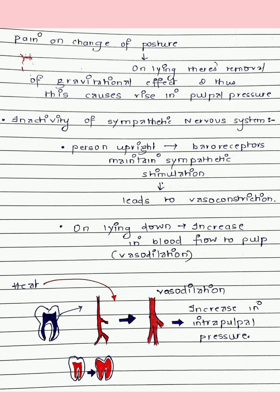Another reason is that when a person is upright, baroreceptors maintain sympathetic stimulation, leading to vasoconstriction of blood vessels. On lying down, there is vasodilation and increased blood flow to the pulp. Additionally, the reason for pain on application of heat is that the vessels, which are constricted, get dilated on heat application, which again increases intrapulpal pressure.